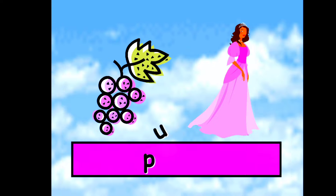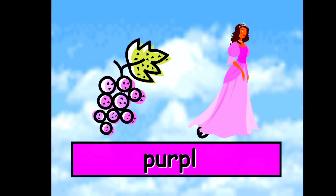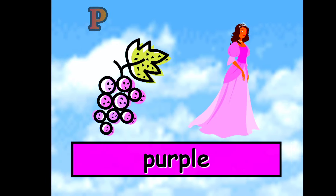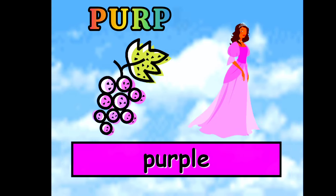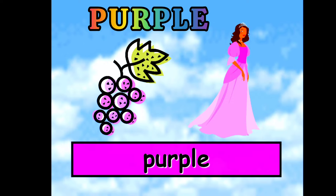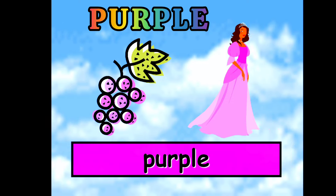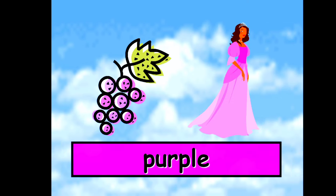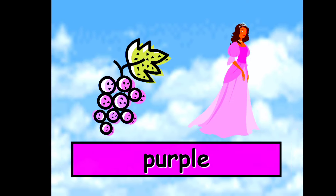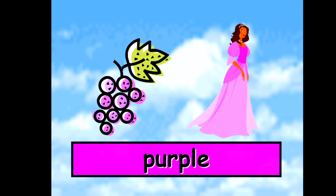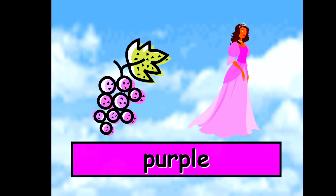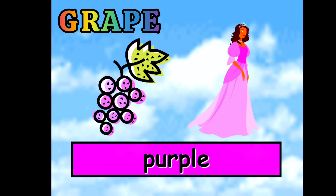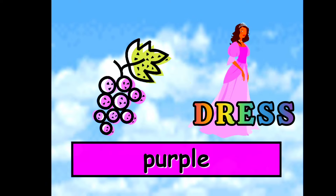Next is, this is a purple color. P-U-R-P-L-E. Purple color. So what you can see in purple color? Purple grapes and purple dress.